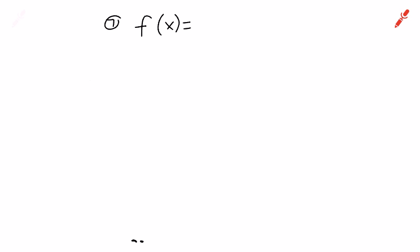The next problem from your homework is number seven, which says f of x equals 3x squared plus 8x minus 10. Now we have a tangent line. In this case our x value is negative 6.